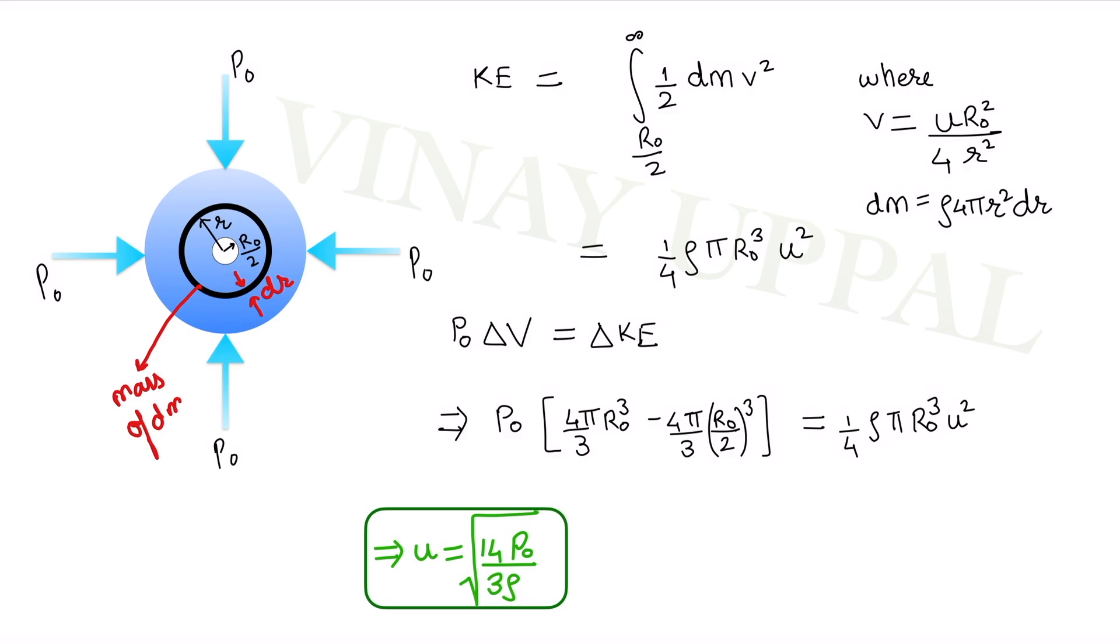And now we are going to apply our work energy theorem. The work energy theorem is that work done by the pressure here P0 will be equal to change in kinetic energy of the water body. Remember, we were asked to ignore the pressure inside the gas bubble. That is why we do not have any term for that. I am going to write P0 into the change in volume, the decrease in volume rather of the bubble should be equal to change in kinetic energy. I will have P0 times the initial volume minus the final volume. This is the change in volume and should be equal to the kinetic energy that we just calculated here.